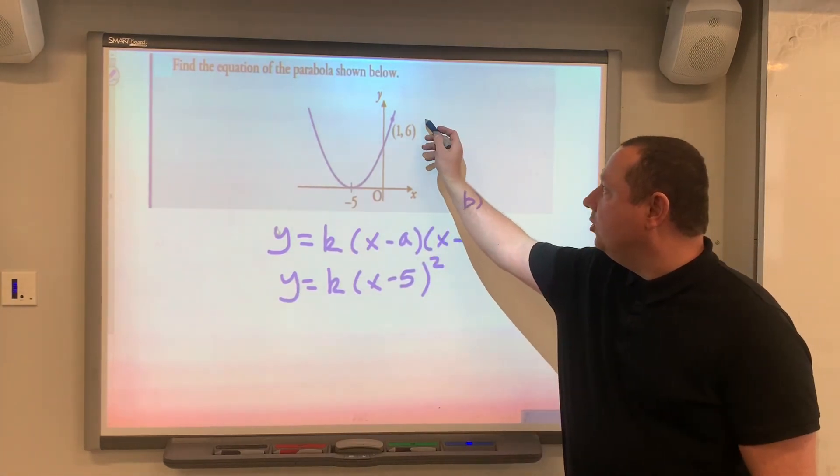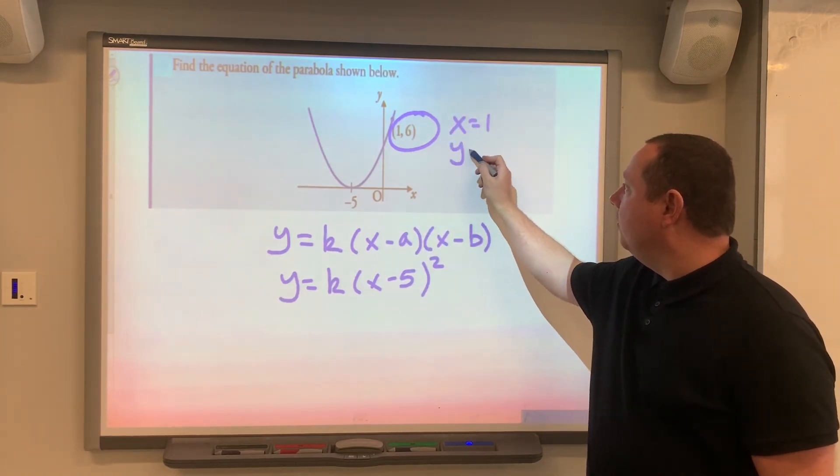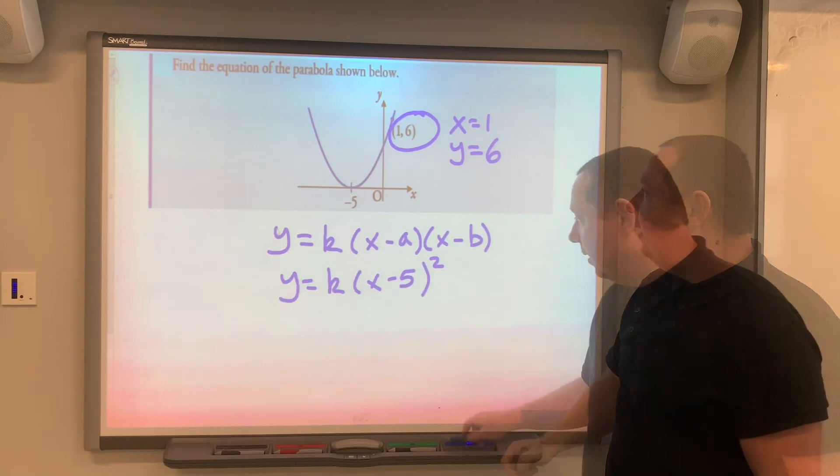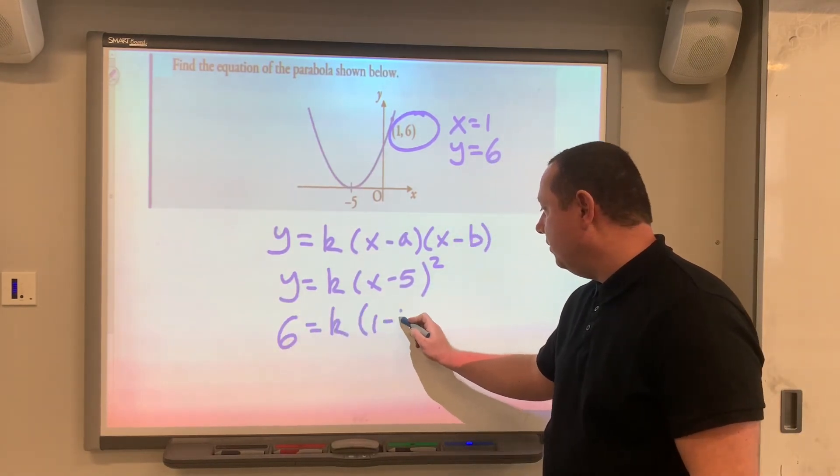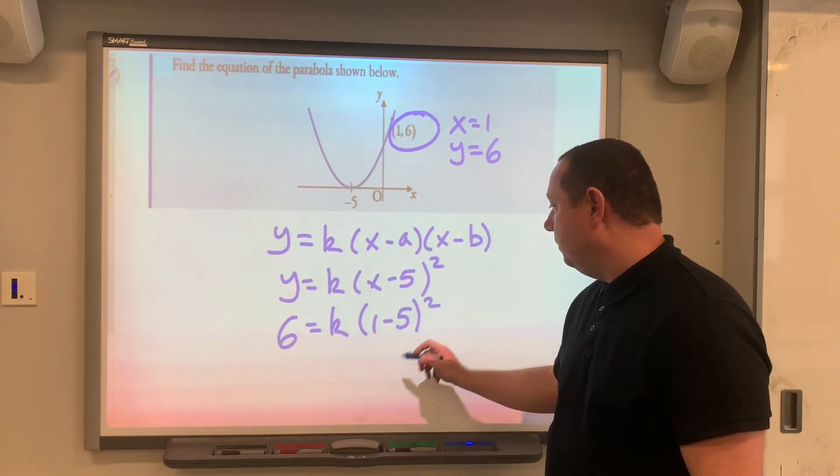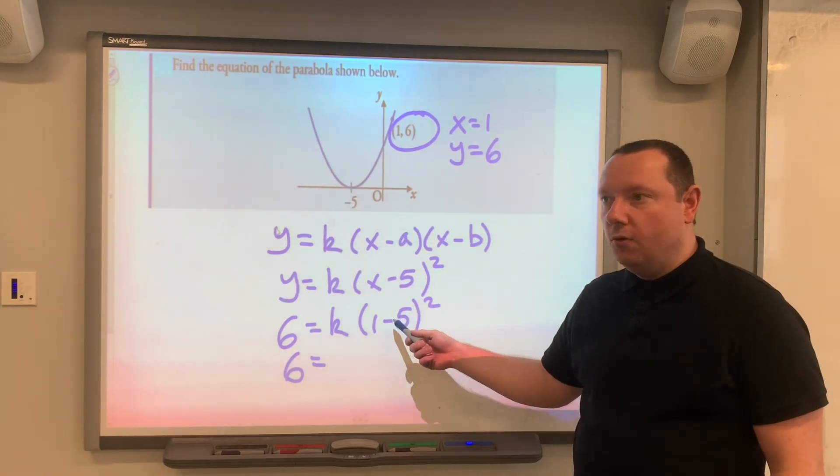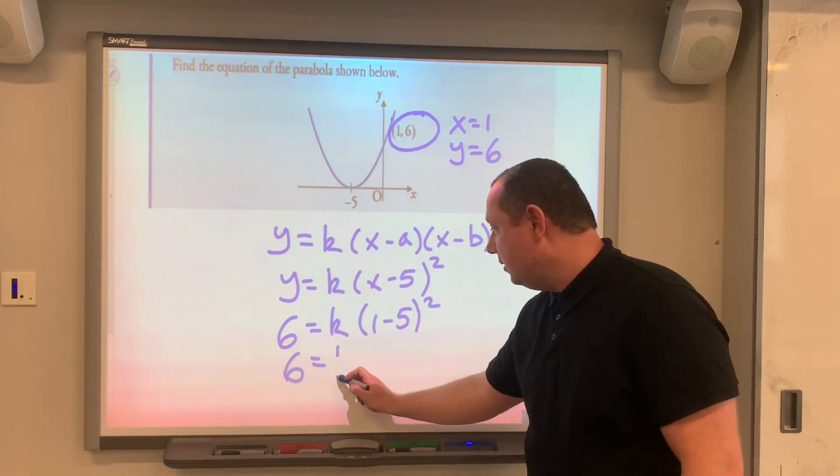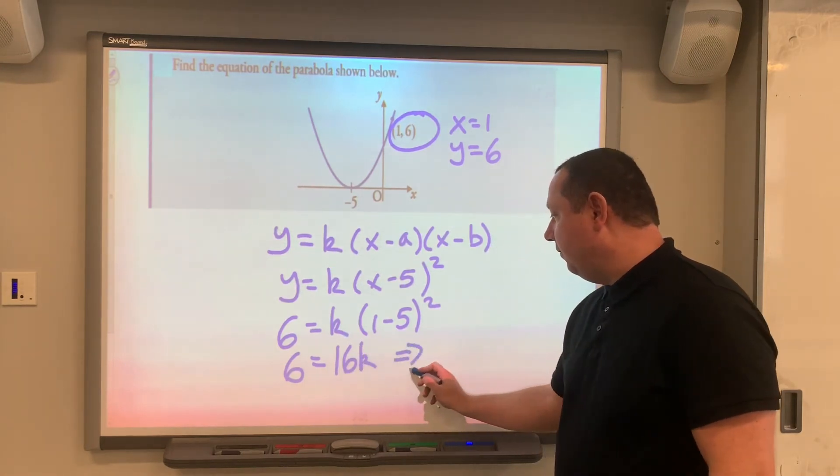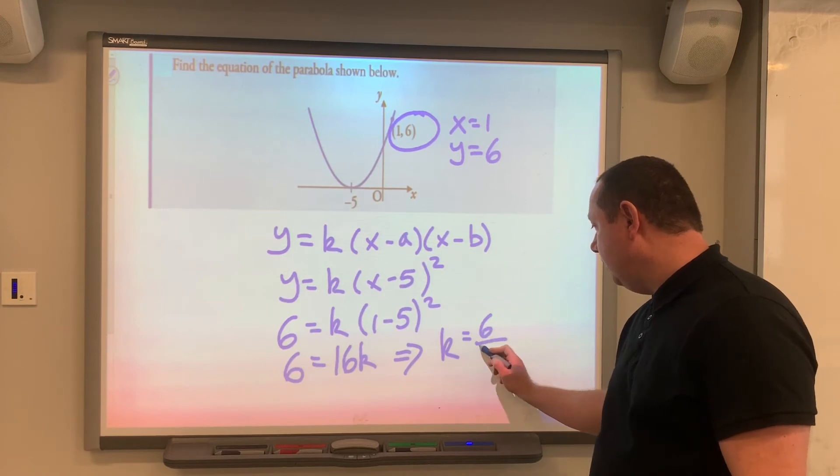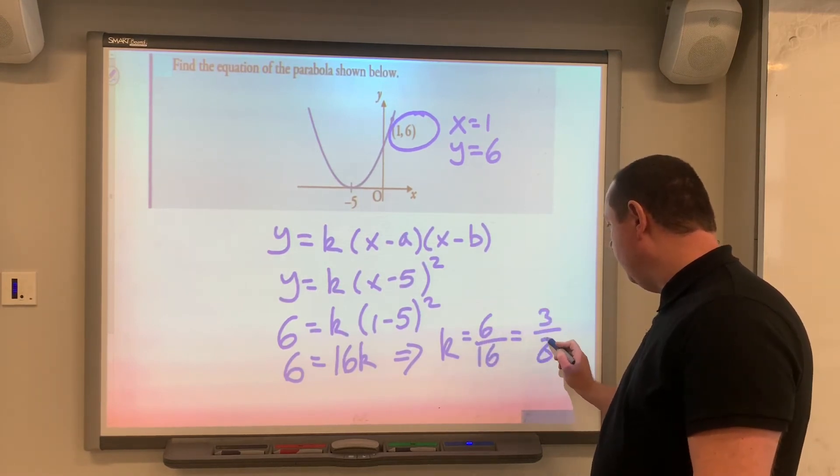And the point we can use is (1,6). So x would equal 1, y would equal 6, and substitute that in. 6 would equal k times (1 minus 5) squared. So 6 equals, well, 1 minus 5 is -4, when you square that you get 16. So 16k, which implies that k must be 6 over 16, which we can simplify down to 3/8. We've now got our equation.